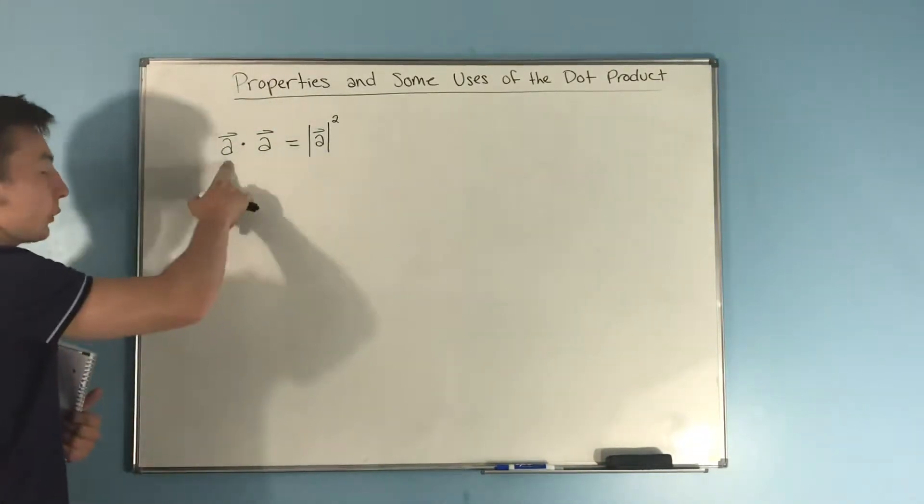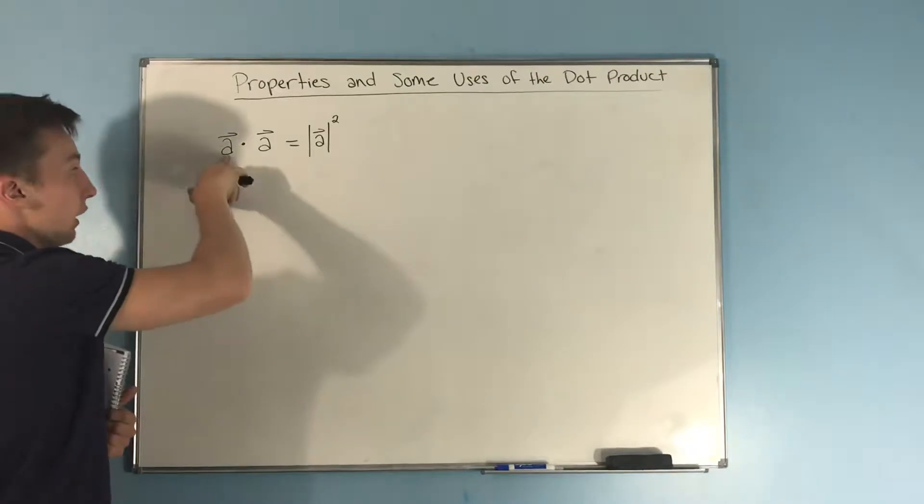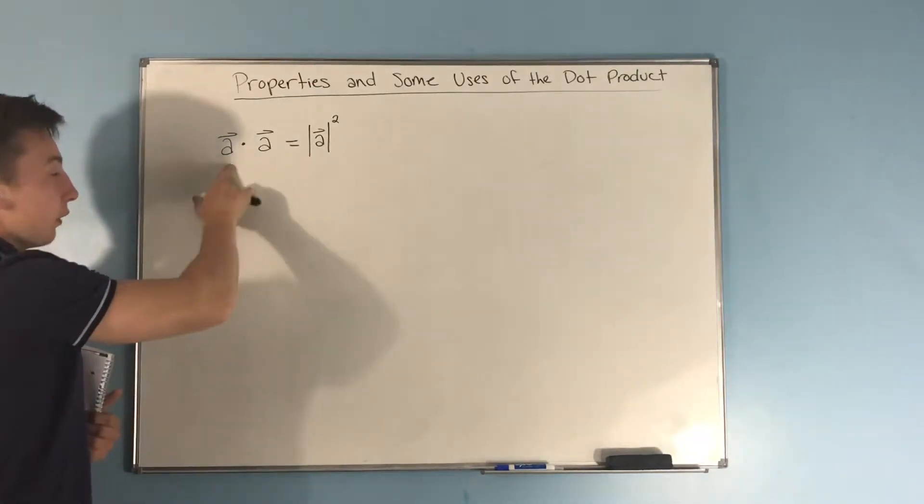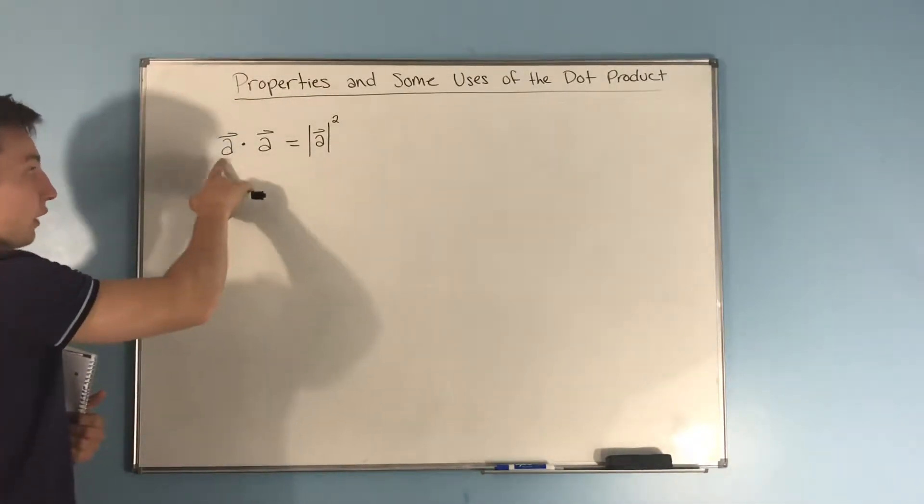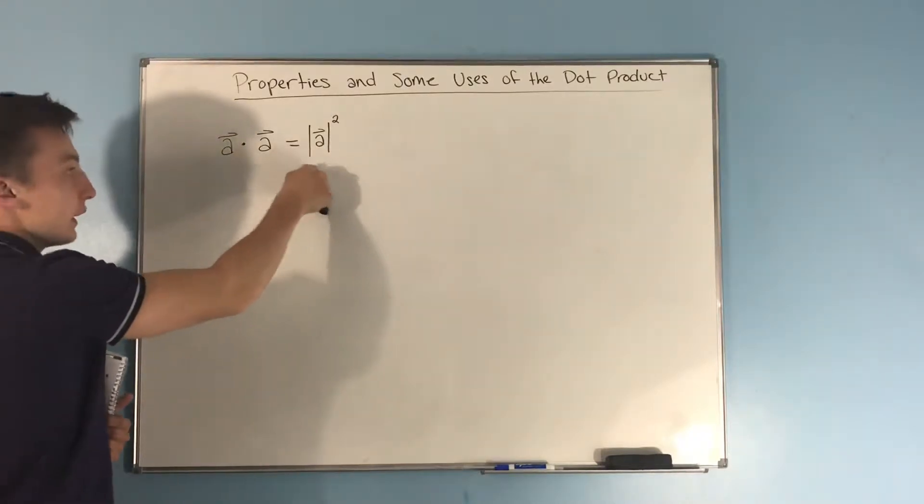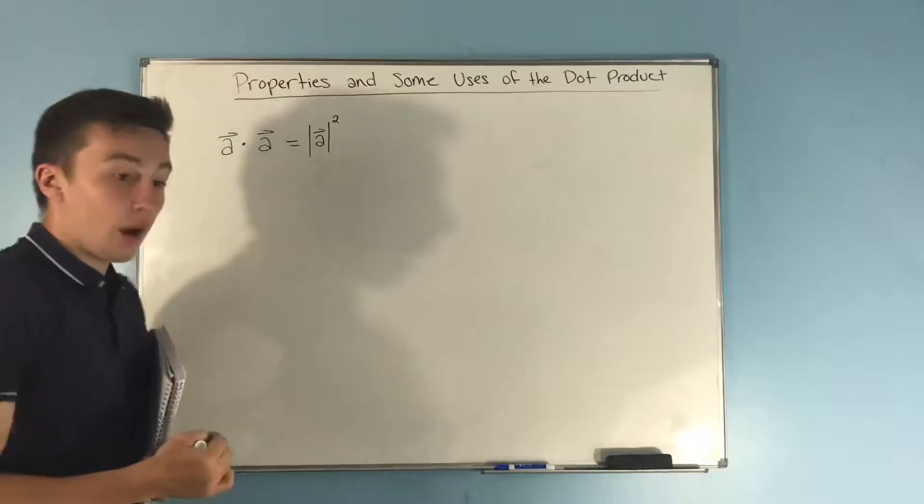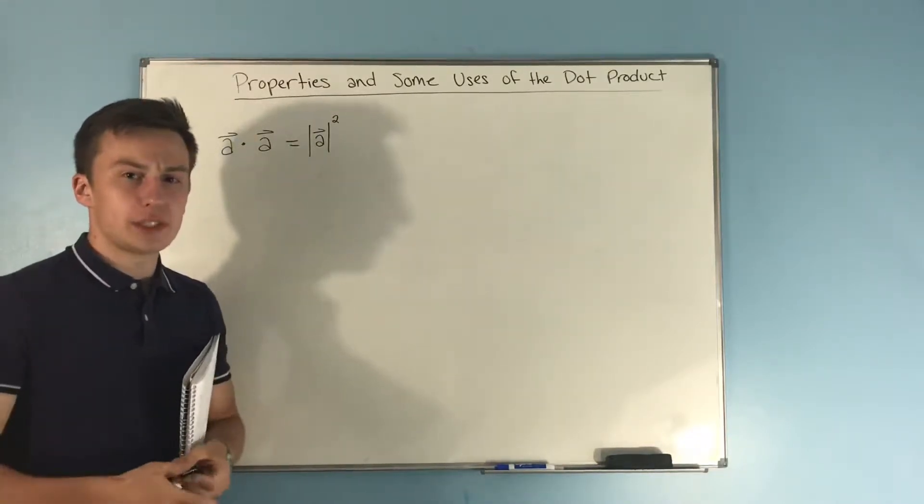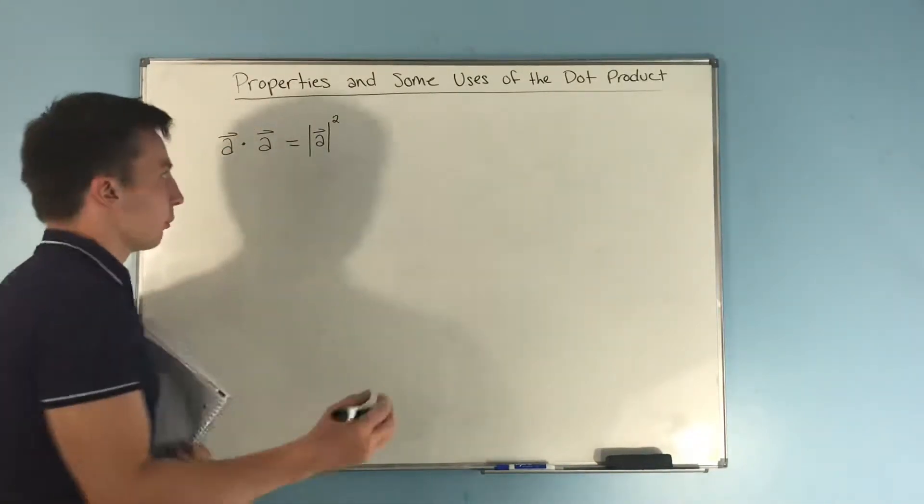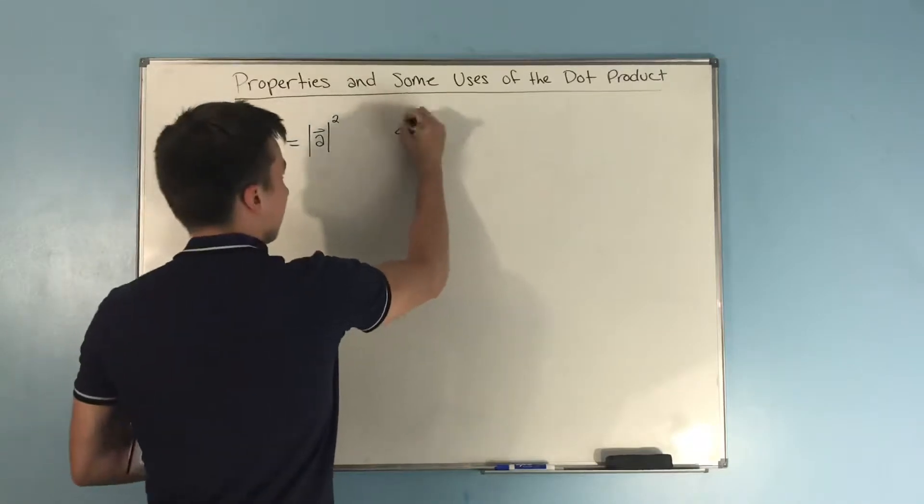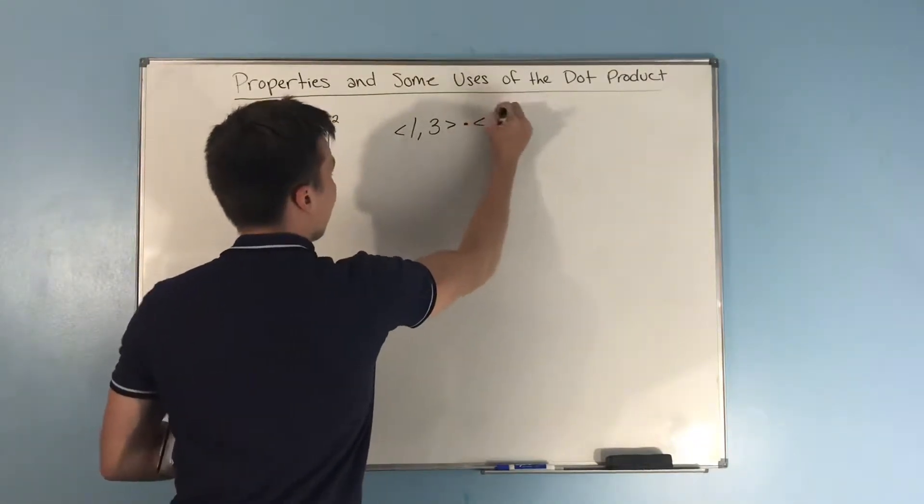First we have that if you dot the same vector with itself, so you have a dot a, that's equal to the magnitude of that vector squared. Now I have a better way to kind of prove this in just a second here, but I might as well prove it for you anyway and actually do it out.